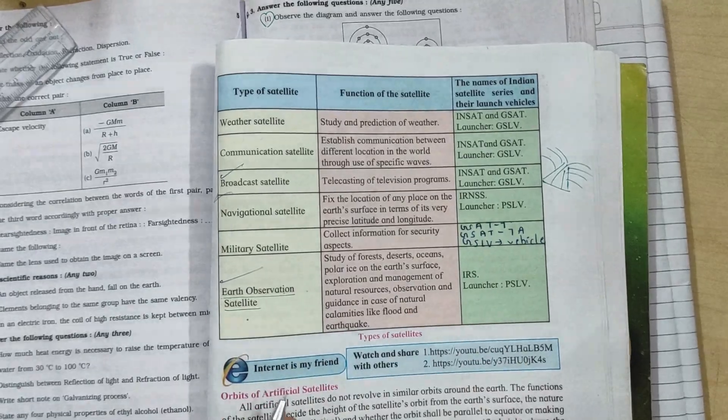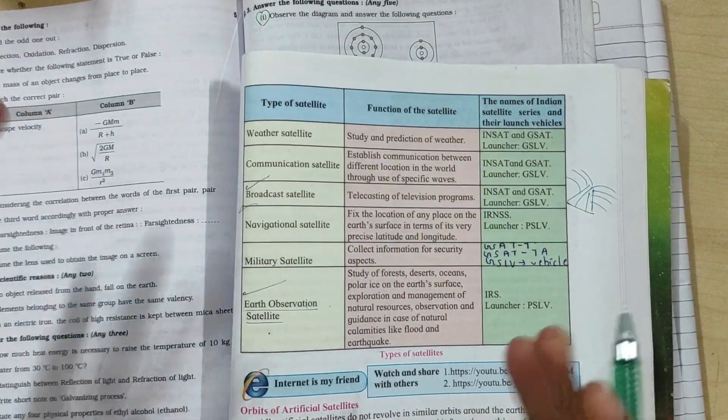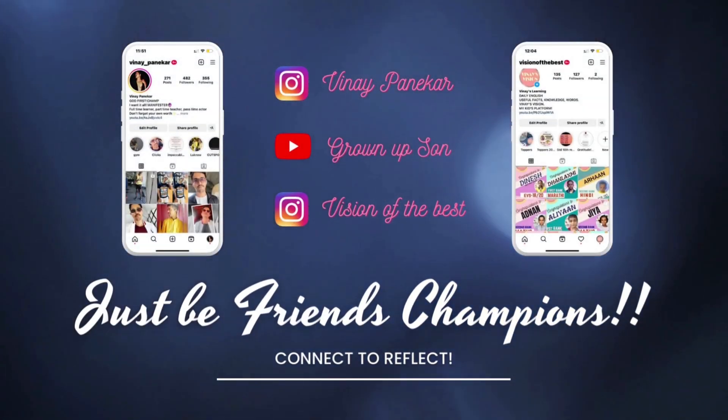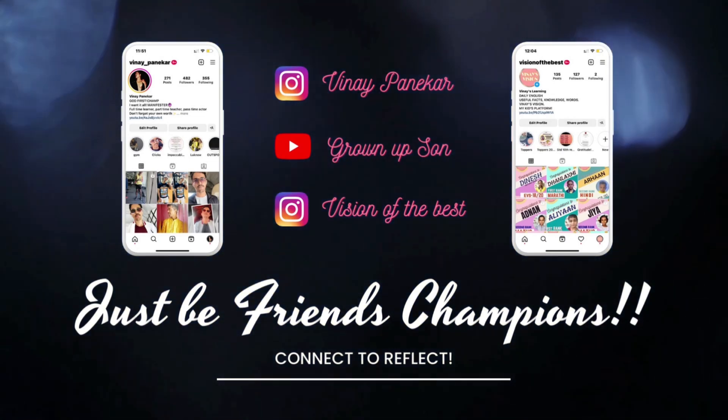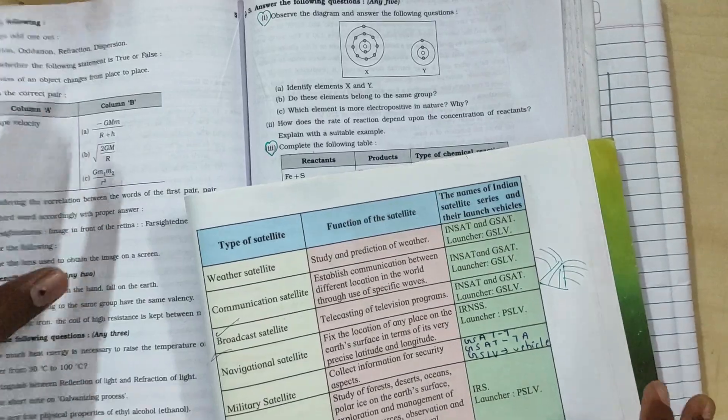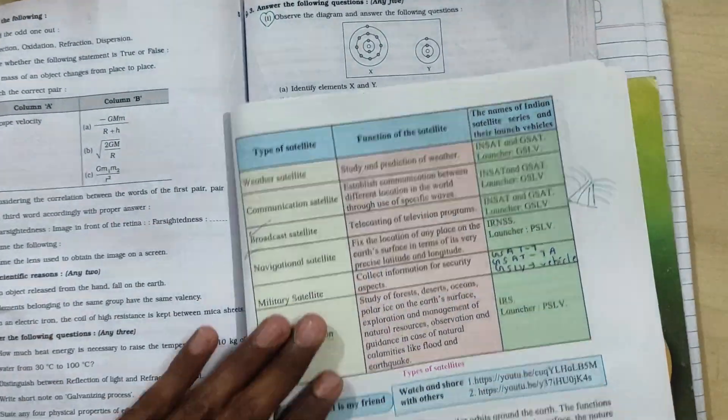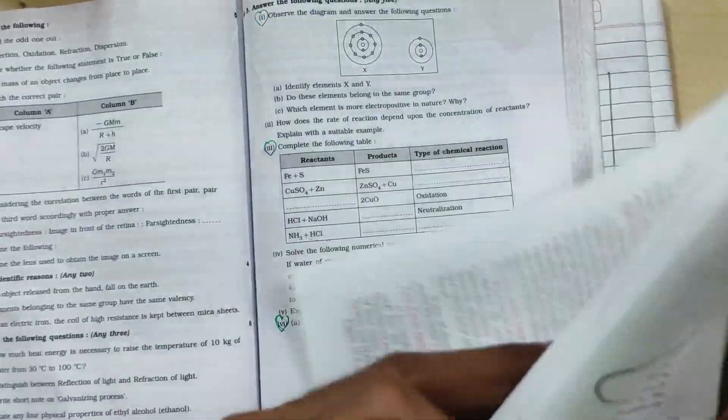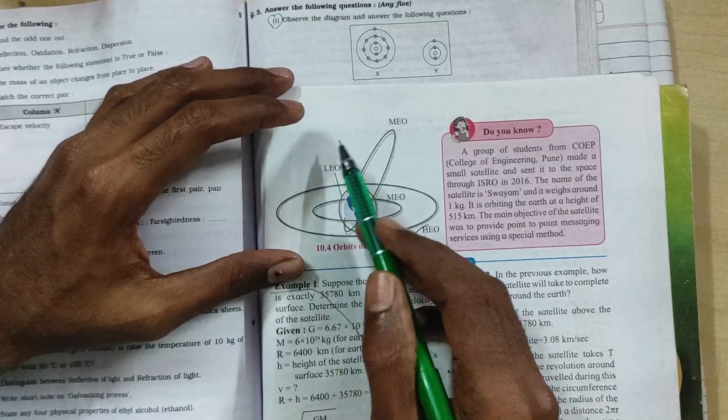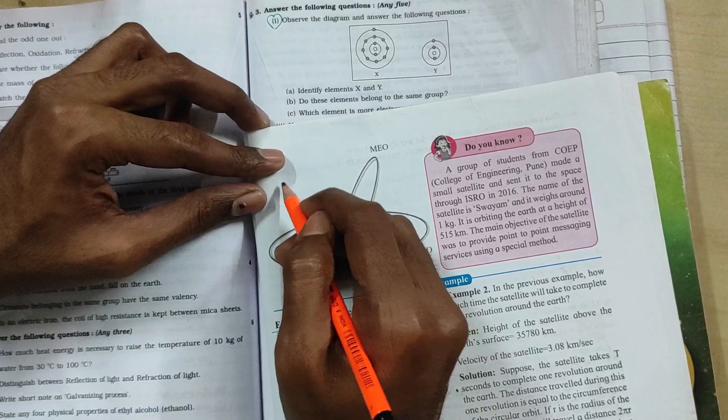I hope these two answers are very much clear to you all. The one which we did was myopia and hypermetropia, and the other one was this one. Now we will do one last answer, that is the orbit thing. If this comes in your exam, you have to write it in full form. LEO means low Earth orbit.